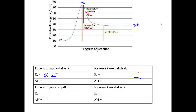The delta H is the difference between the beginning and the end — from 10 up to 34 is a difference of positive 24 kilojoules. Now for the reverse reaction, you go backwards: starting at 34 and going up to 76, that's an activation energy of positive 42 kilojoules. And the delta H for the reverse goes from 34 down to 10, so that's negative 24 kilojoules.